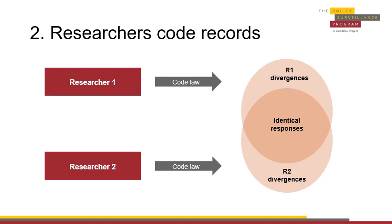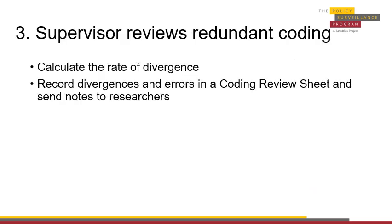The second step in redundant coding consists of both researchers coding their records. As researchers code the same jurisdiction, they will overlap on some responses but will diverge on other responses. The objective is to identify which responses were divergent and to resolve those divergences. Once both researchers have coded their records, the supervisor should compare their responses to determine which responses were divergent. The supervisor can then calculate the rate of divergence between researchers to determine at what rate future records should be redundantly coded.